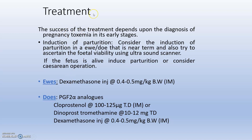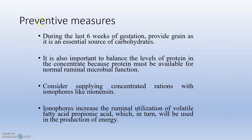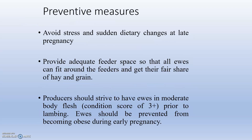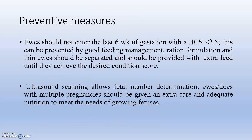For prevention, during the last six weeks of gestation provide grain as an essential source of carbohydrates, along with ionophores and zinc and selenium supplementation, with all micronutrients and macronutrients in proper ratios. Avoid stress and sudden dietary changes, provide adequate feeder space, always check body condition scoring, and do not add new feed additives after six weeks of gestation. Ultrasound scanning allows fetal number determination, so feeding patterns can be adjusted when fetal numbers are high.